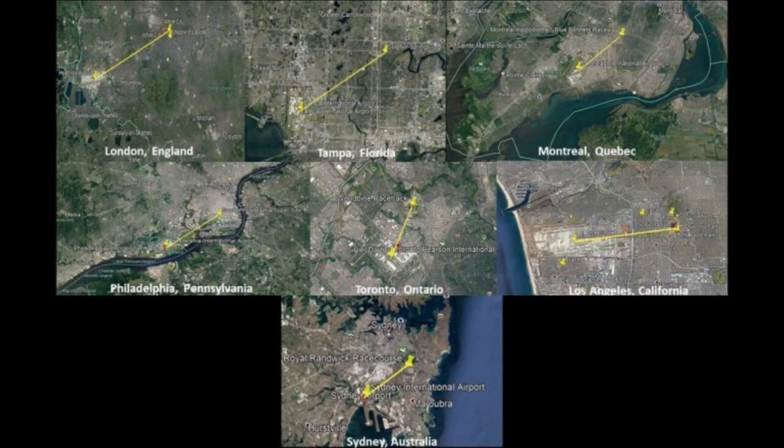After I made that initial connection, commenters left other examples of the same kind of relationship between airports and racing tracks, past and present, including Montreal, Quebec, Canada; Philadelphia, Pennsylvania; Toronto, Ontario, Canada; Los Angeles, California; and Sydney, Australia.